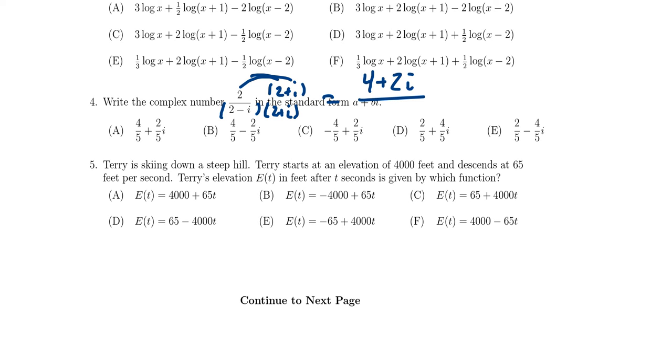In the denominator since you have a complex number times its conjugate that product always becomes a sum of squares. You get 2 squared which is 4 and then 1 squared which is 1.